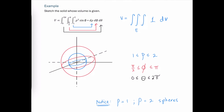Let's take a look at the values of phi going from pi over 2 to pi. Remember, phi is measured from the positive z-axis down, and when we reach the value pi over 2, that means we are at the xy-plane. So we really just want the portion of these spheres from pi over 2 to pi, which means the lower hemisphere.